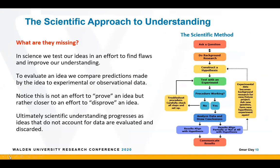Almost half of Americans can't explain why we would want to have one group where we test a new drug and another group where we don't in order to compare them — fundamental to the scientific process. In science, we're really looking to test our ideas, looking for flaws so that we can improve our understanding. We take our ideas and compare the predictions from those ideas to experimental or observational data. A common misconception is that scientists are out to prove their ideas right, but the reality is we're much closer to trying to disprove our ideas.